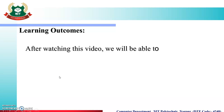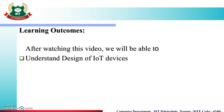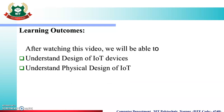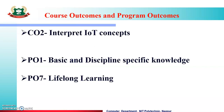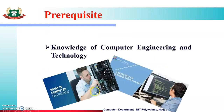Learning Outcomes: After watching this video, we will be able to understand the Design of IoT Devices, understand Physical Design of IoT, and identify IoT Protocols. Course Outcomes: After this unit, we will satisfy CO2 — Interpret IoT Concepts — mapped to PO1 and PO7: Basic and Discipline Specific Knowledge, and Lifelong Learning.